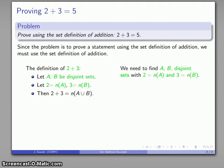So what I do need to do is to find A and B which are disjoint sets where 2 is the cardinality of A, 3 is the cardinality of B.